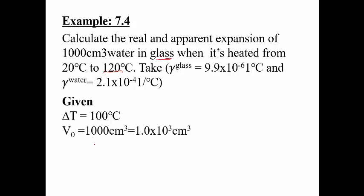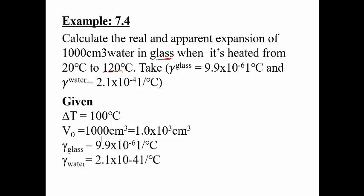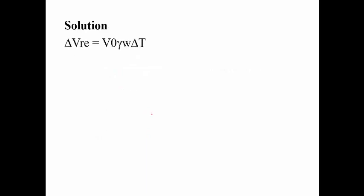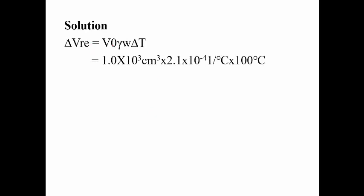V₀ is equivalent to 1000 cm³. Gamma of glass is given and gamma of water is also given. We are asked to determine the real and apparent expansion both. To calculate the real expansion, we take V₀ times γ_real. When we take γ_real, we will use gamma of water, which is 2.1 × 10⁻⁴. And V₀ is 1 × 10³ cm³, and ΔT is 100°C. Multiplying this all, you get 21 cm³.